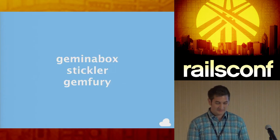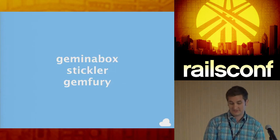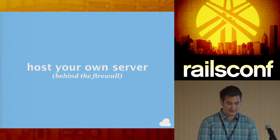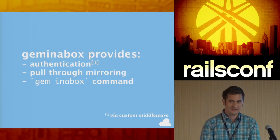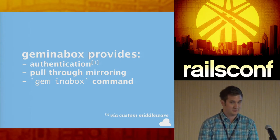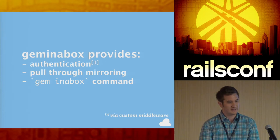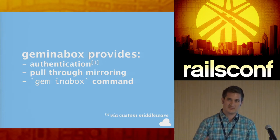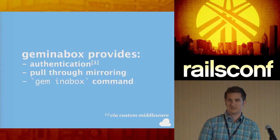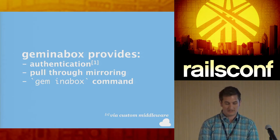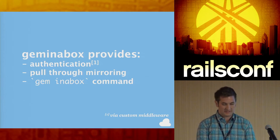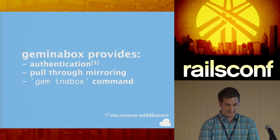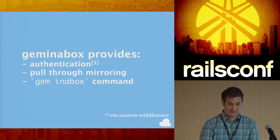For gem servers there are three options: Gem in a Box, Stickler, and Gem Fury. If hosting your own, it should be behind the firewall. Gem in a Box provides a nice web interface, authentication (you build your own Rack middleware), pull-through mirroring from RubyGems so you don't depend on RubyGems being up when you deploy, and a simple command-line client.